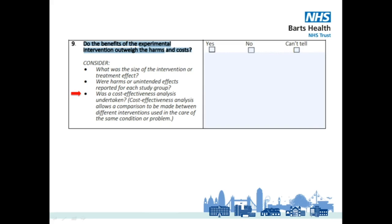So what is the answer to question 9? The study showed that the treatment effect was medium. Adverse effects were reported in both the duloxetine and placebo groups. Safety was reviewed and proved to be in line with previous studies on duloxetine. Significant improvement in pain reduction and health-related quality of life were observed in the duloxetine group. However, there was no cost-effectiveness analysis. As a result, we can't really tell whether the benefits of the study drug outweigh the harms as well as the cost.